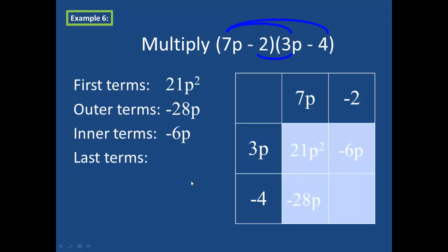And last term, of course, will be negative 2 times negative 4 for a positive 8. So I get the same four terms regardless of which method I choose.